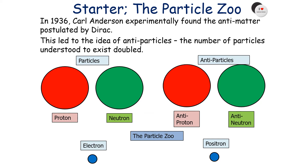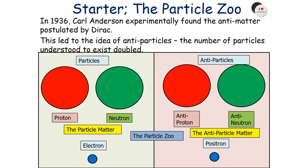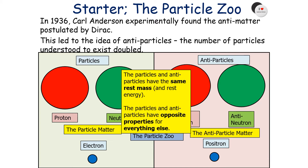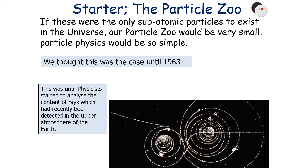The number of particles understood to exist doubled. As well as having the proton, neutron, and electron, you had the antiproton, antineutron, and the positron — both particle matter and antiparticle matter. Particles and antiparticles have the same rest mass and the same rest energy, but opposite properties for everything else.